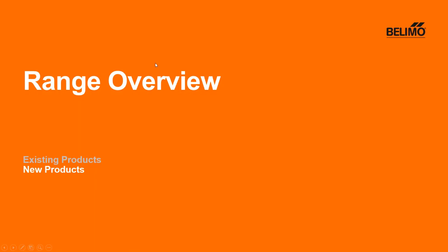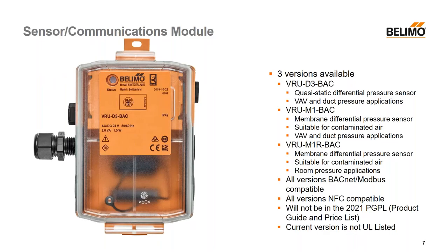I went over those pretty quickly because they've been available, but I wanted to spend a little more time talking about one of the new products: the universal range. This consists of a sensor/communications module as well as an actuator. We have three versions available. The first is the VRU-D3-VAC. It uses the same D3 differential pressure sensor that is used in the compact.